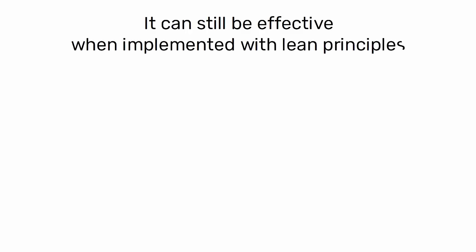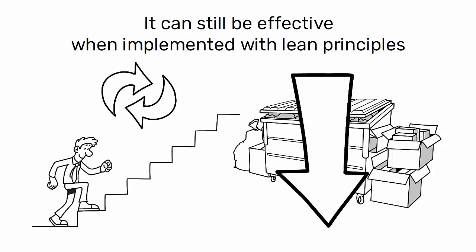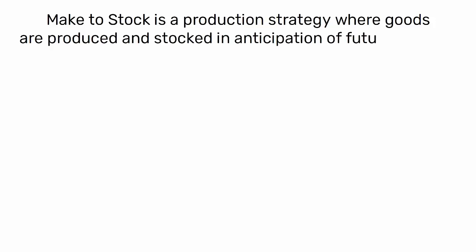However, it can still be effective when implemented with lean principles such as continuous improvement and waste reduction. In summary, make-to-stock is a production strategy where goods are produced and stocked in anticipation of future demand.